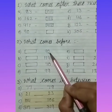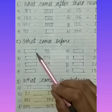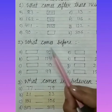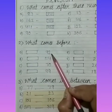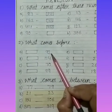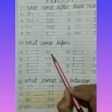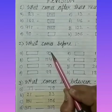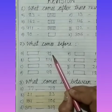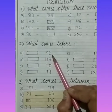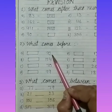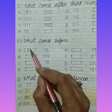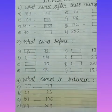Our second question: what comes before? Before means here is a number and what comes before it. Number A is 92. Tell me, children, what comes before 92? Let's count: 91, 91, and 92. So before 92 is 91.